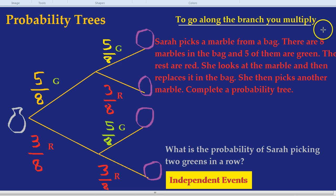So green and then green would be five out of eight times by five out of eight. When we multiply fractions we just need to multiply the numerator and multiply the denominator. That's 5 times 5 which is 25, and 8 times 8 which is 64. In other words the chances of her picking two greens in a row is 25 out of 64.